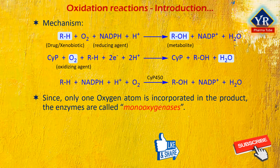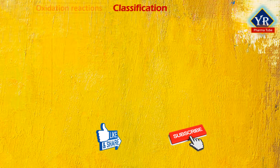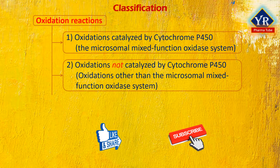Quite often, the product of such an oxidation reaction contains a hydroxyl functional group; hence the enzymes are sometimes called hydroxylases. The oxidation reactions of phase 1 metabolic reactions are classified into two categories: number one, the oxidations catalyzed by the cytochrome P450 enzyme, that is the microsomal mixed function oxidase system; and number two, the oxidations that are not catalyzed by the cytochrome P450 enzyme, that is, those not catalyzed by the microsomal mixed function oxidase system.